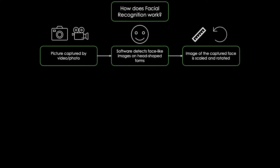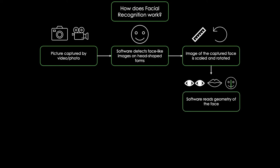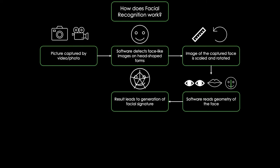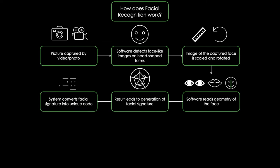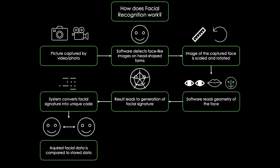Then, the geometry of the face is determined by looking at key factors like the distance between the eyes, the thickness of the lips, and the distance between chin and forehead. Some advanced recognition systems take hundreds of such factors into account. This results in the generation of a so-called facial signature, which is then converted into a unique coding that facilitates easier computational comparison. The acquired data is then compared to a database, and if a match is found, the software returns the details of the matched face.